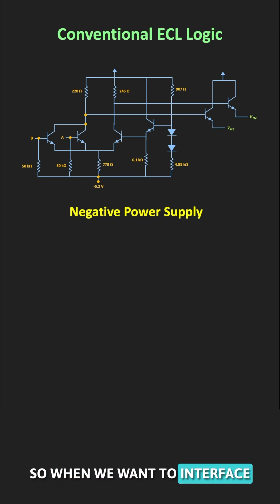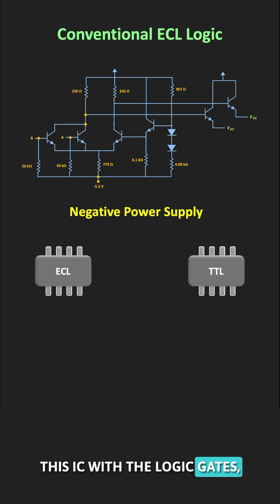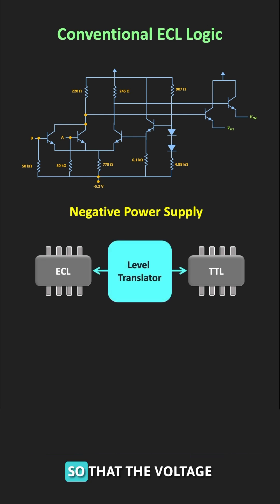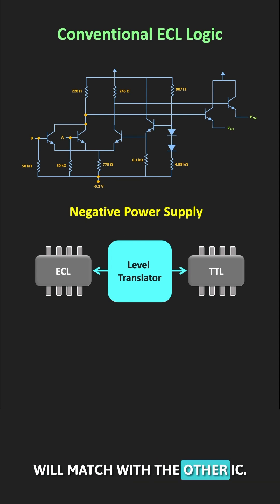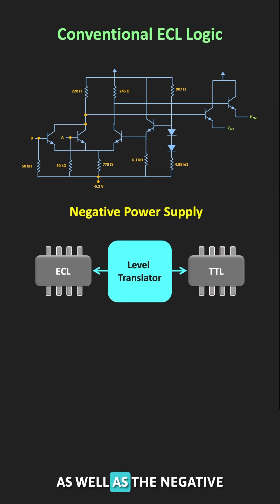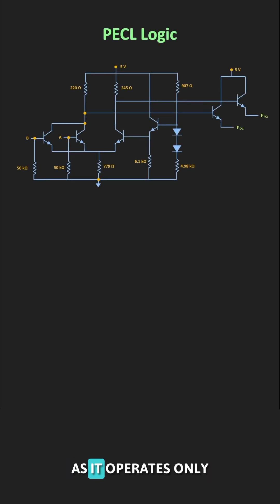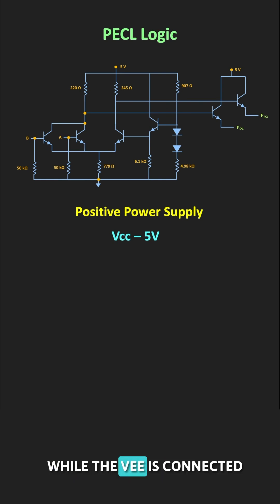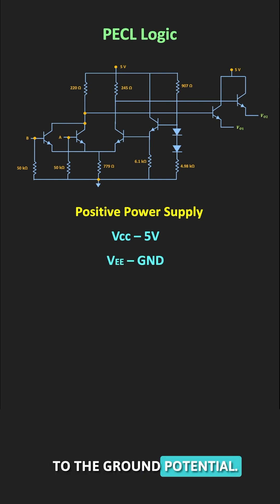When we want to interface this IC with other logic gates, we need to use a level translator IC so that the voltage levels match. Additionally, we need both positive and negative power supplies. The PECL logic solves this problem as it operates only with a positive power supply, where VCC equals 5V while VE is connected to ground potential.